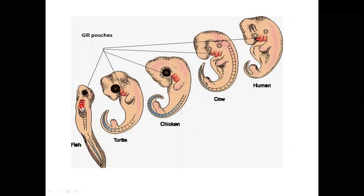Fish embryos, turtle embryos, chicken embryos, cow embryos, and human embryos all have gill pouches present on the sides of the throat. Later these become modified into different structures.